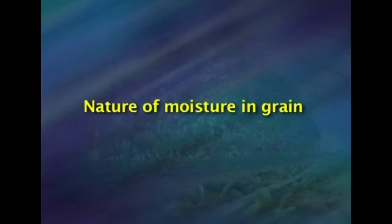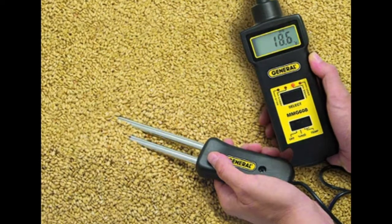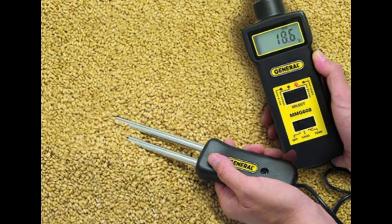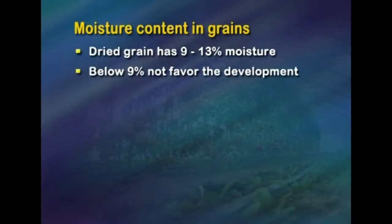Water or moisture in the grain is of two distinct types. One is chemically and physically bound. Chemically bound water is part of the chemical composition of the grain, also sometimes called water of composition. Removal of such water would alter the entire grain structure, affecting not only storability and viability but also its economic value, and is thus undesirable. Physically bound water, also known as free water, is divided into two types: adsorbed and absorbed water.